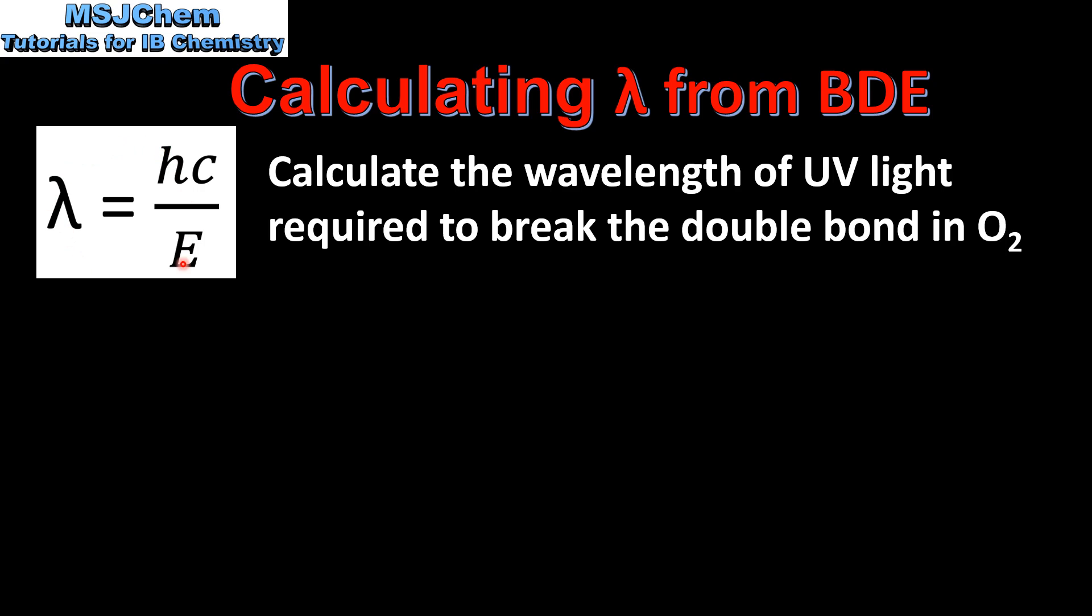Next we'll use this equation. Wavelength equals Planck's constant times the speed of light divided by the energy required to break one double bond.